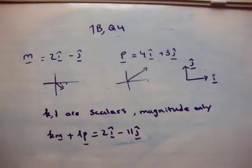We're also given that there are two scalars, k and l. Scalars have magnitude only and no direction, so they are just a number.